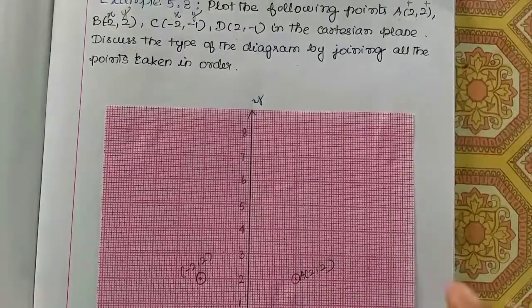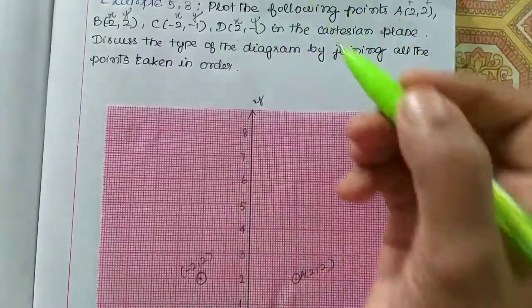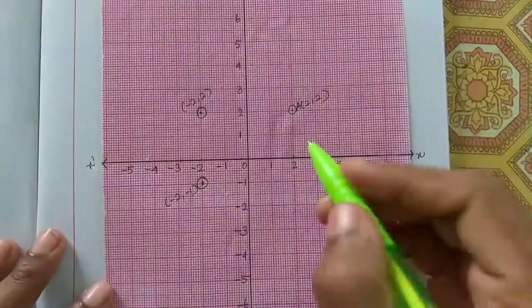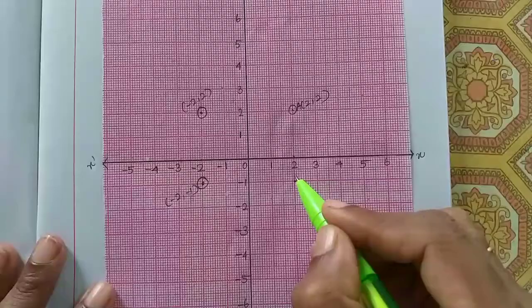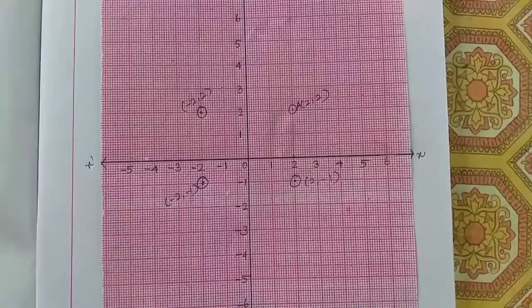Next, the D point is 2, minus 1. X-axis is 2 and y-axis is minus 1. So x-axis 2 here, y-axis minus 1 here. This is 2, minus 1. Now join the points.